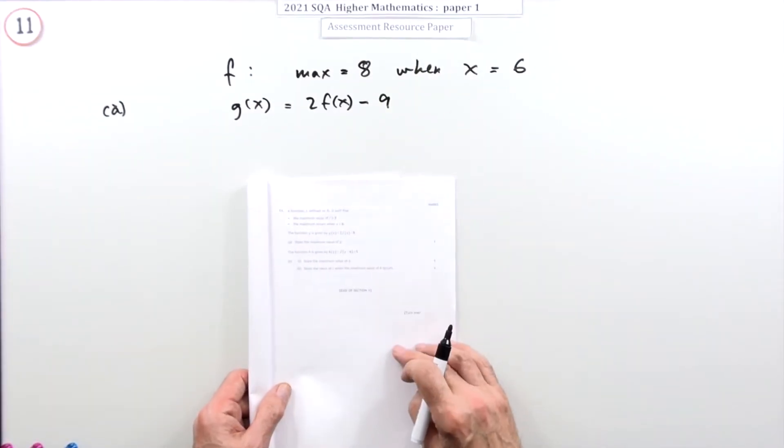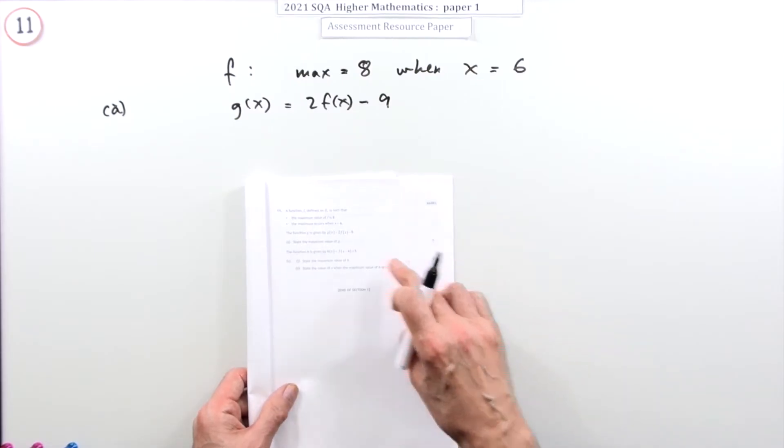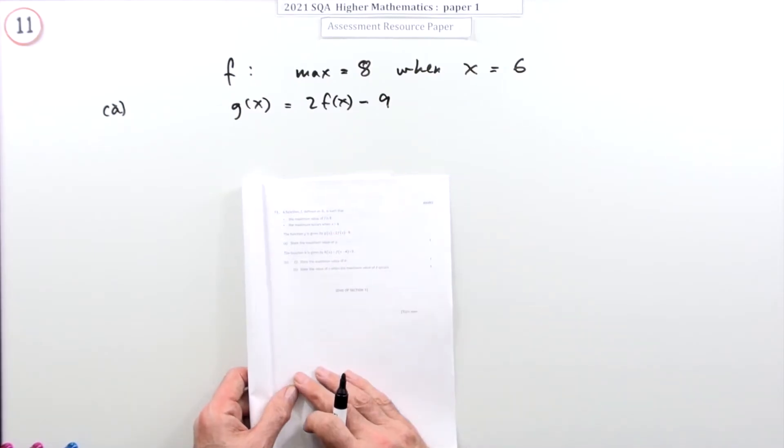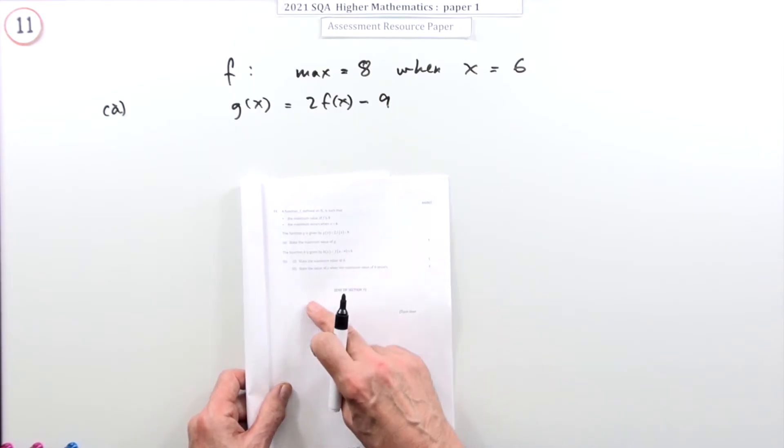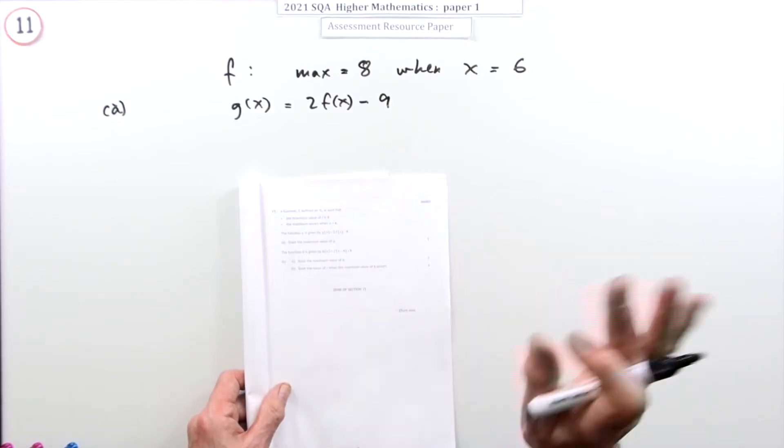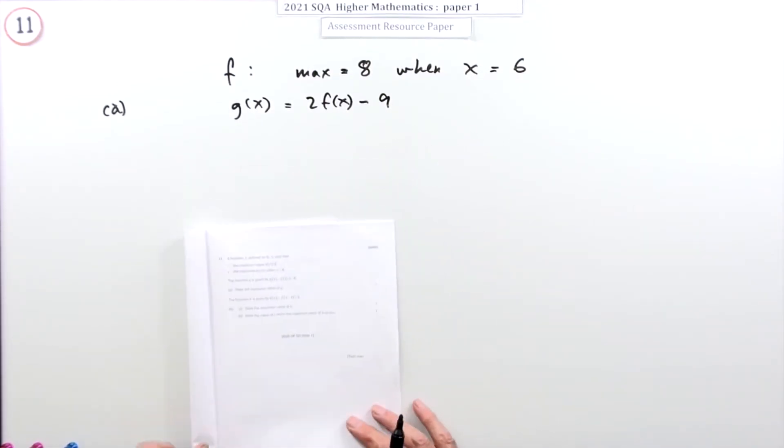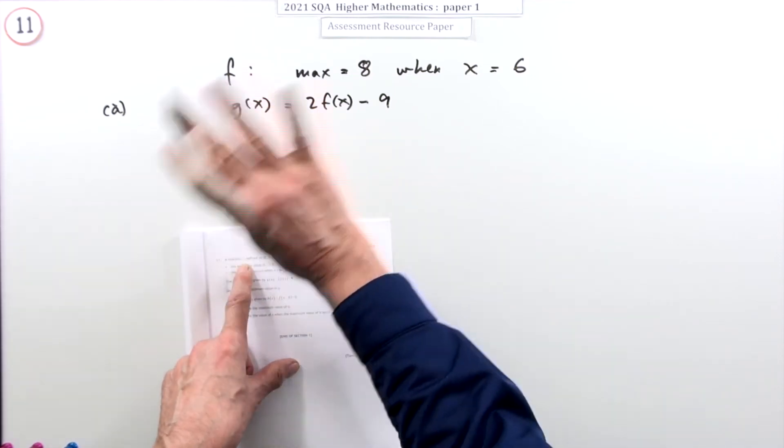Number 11 from paper one of the 2021 higher maths resource paper, a three mark question on transformation of functions. There's not actually a lot to it. No working needs to be shown because it just says state, state, state. There's your three marks as long as you do it correctly.